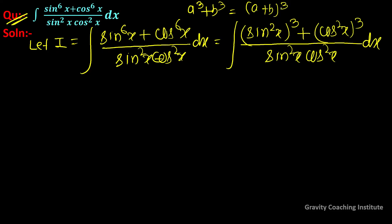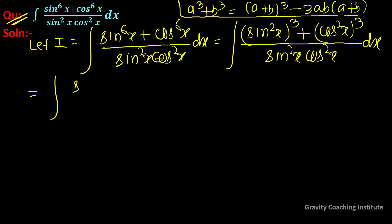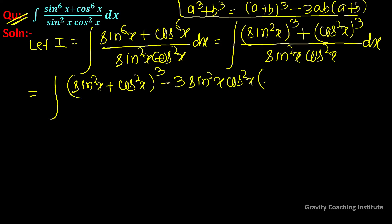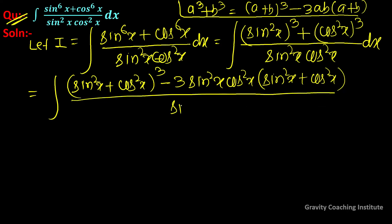यह identity है: a³ + b³ = (a + b)³ - 3ab(a + b). तो इस formula के according अगर हम इसको numerator में apply करेंगे तो यह होगा: (sin²x + cos²x)³ - 3sin²x·cos²x·(sin²x + cos²x), upon denominator sin²x · cos²x.